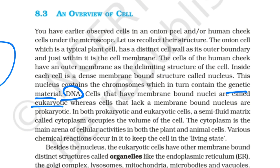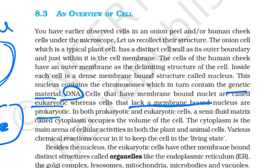Cells that lack a membrane-bound nucleus are prokaryotic. Eukaryotic cells have a specific nucleus, while prokaryotic cells do not have a membrane-bound nucleus.